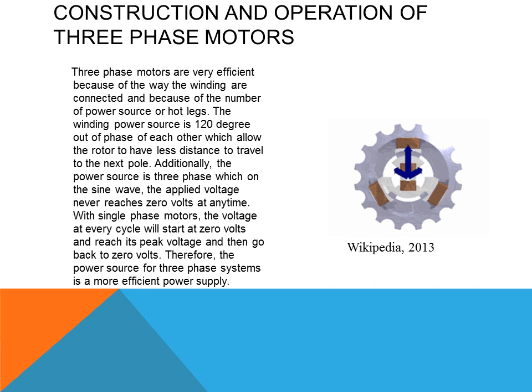Additionally, the power source is three-phase, which sits on the sine wave. The applied voltage never reaches zero at any time, as each phase is 120 degrees out of phase with the others on the sine wave. With single-phase motors, the voltage at every cycle will start at zero, reach its peak voltage, and then go back to zero volts. Therefore, the power source for three-phase systems is a more efficient power supply.